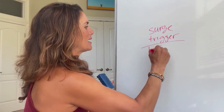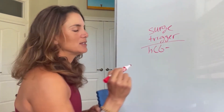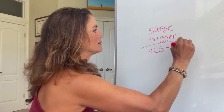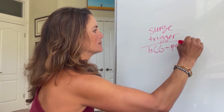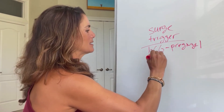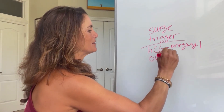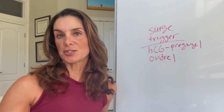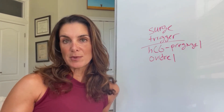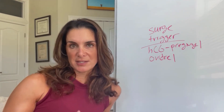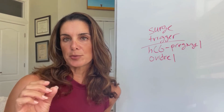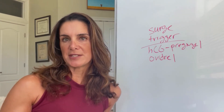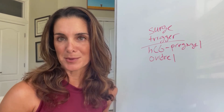HCG goes by a lot of names — one is chorionic gonadotropin, with the brand name Pregnyl; another is Ovidrel. If you're doing IVF, you'll likely get an HCG or HCG derivative. This is one of the medications that is very precisely timed — your retrieval is based on that time, so it's really important to take your HCG at the exact specified time.